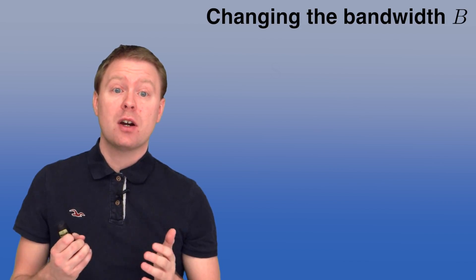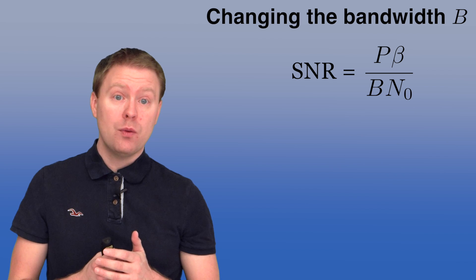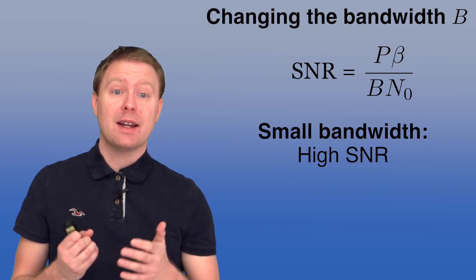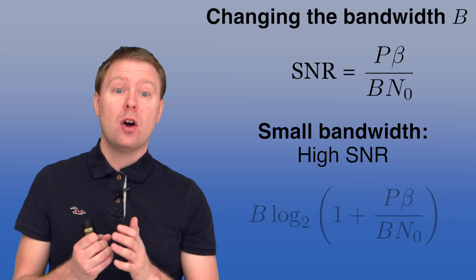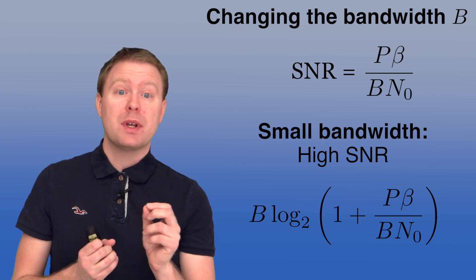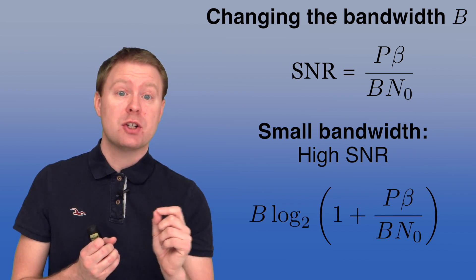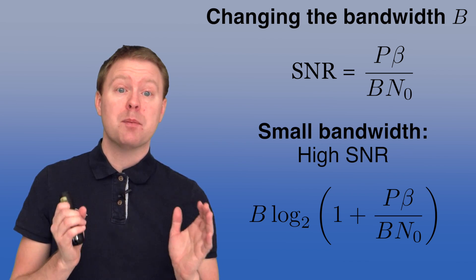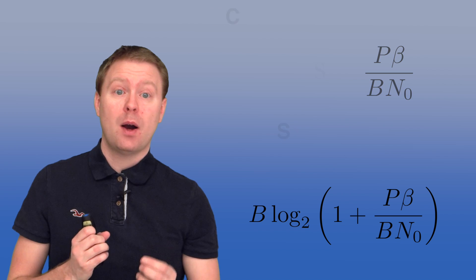We get almost the opposite behavior when changing the bandwidth, because the SNR is now proportional to 1 over the bandwidth. So when we have a small bandwidth, we get a high SNR, and in that case log 1 plus SNR will be very little affected by changing the SNR. So changing the bandwidth has almost no impact on that part of the expression.